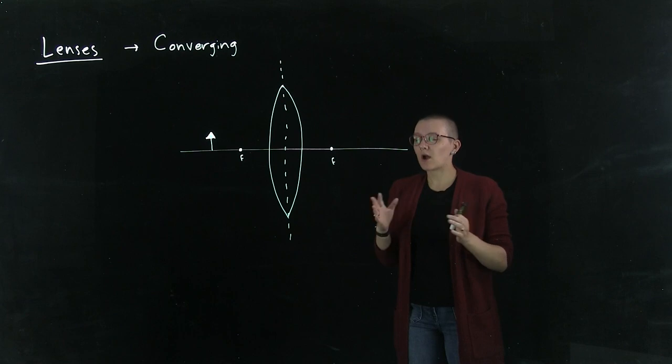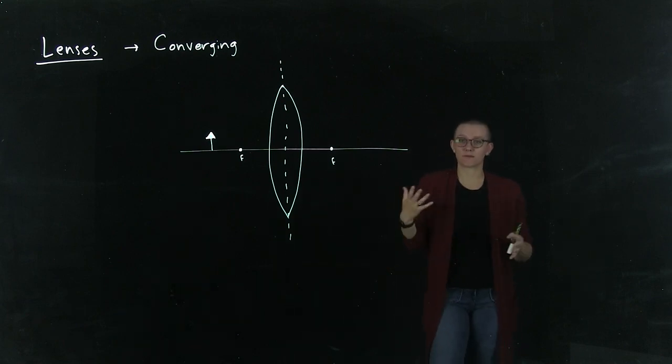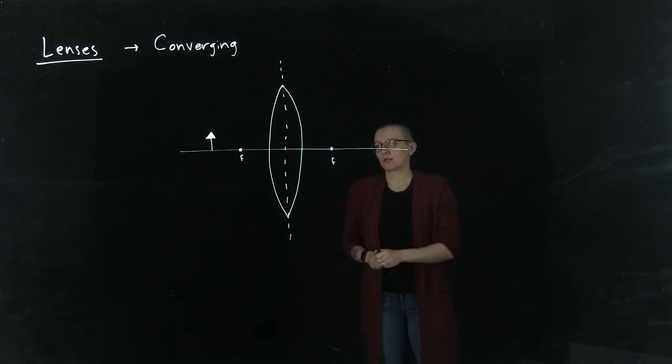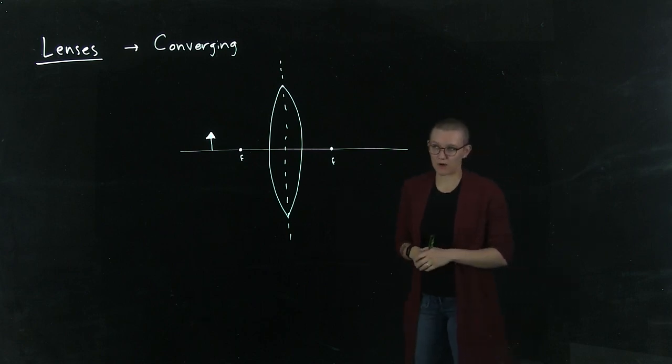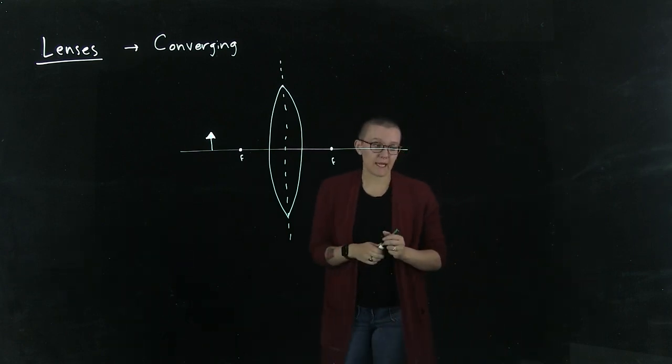We're going to talk about how to draw a ray diagram to help us figure out where the image is located. There are specifically three rays that you can draw that will really help us.